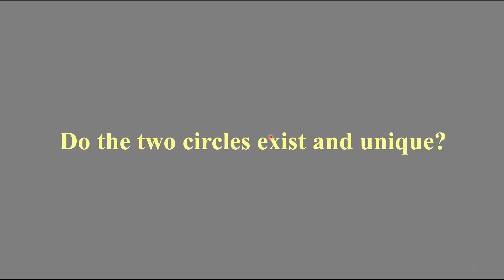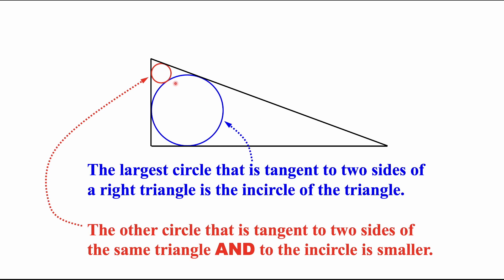Then we should answer the question: do the two circles exist and are they unique? The answer is yes. Let's take a look at this diagram. The blue circle is the largest circle tangent to all three sides of the right triangle — that is the incircle. The red circle is the circle tangent to two sides and also tangent to the incircle.